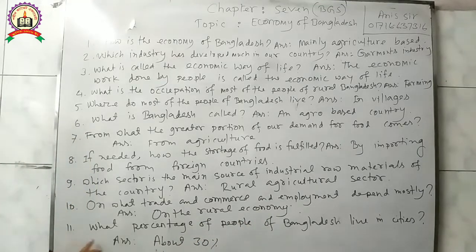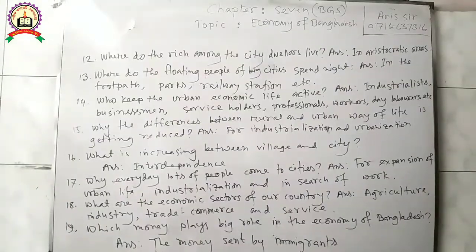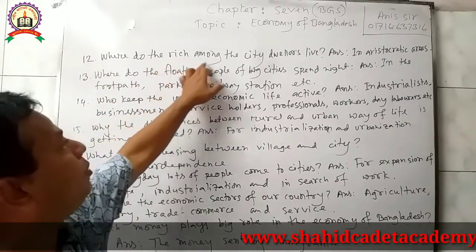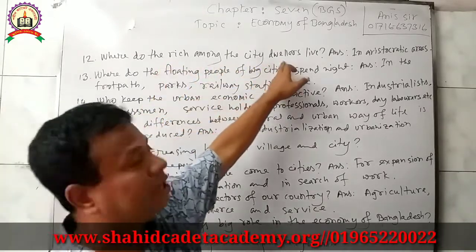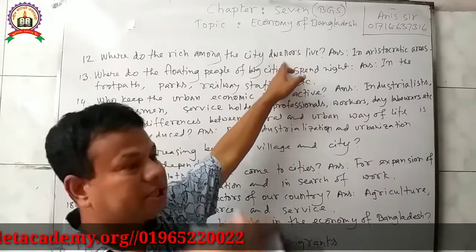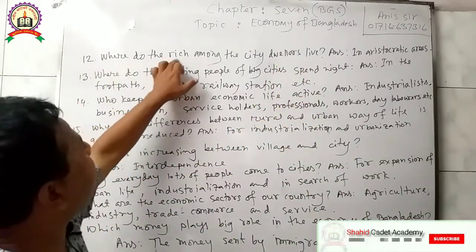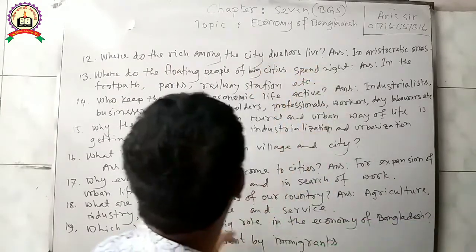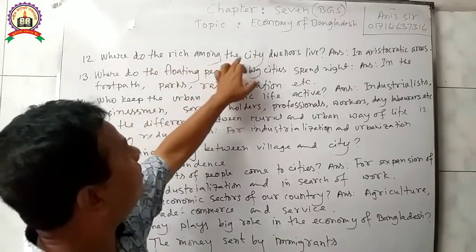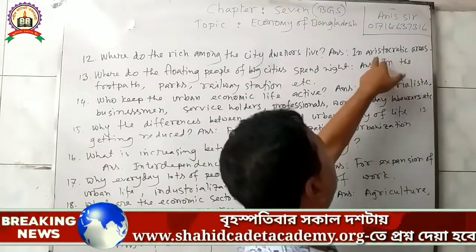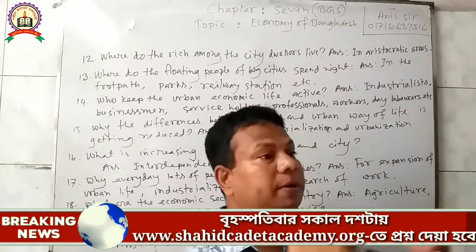Question 11: What percentage of people of Bangladesh live in cities? Answer: About 30% of people of Bangladesh live in cities. Question 12: Where do the rich among the city dwellers live? Answer: The rich among the city dwellers live in aristocratic areas — that means developed areas.